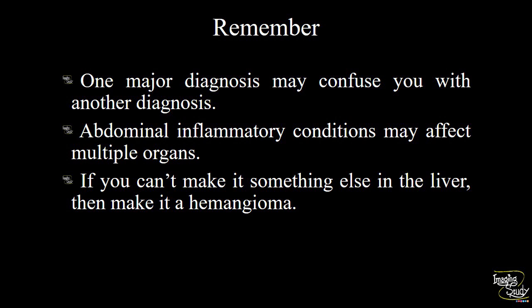Take-home message: one major diagnosis may confuse you with another, so be careful. Abdominal inflammatory conditions may affect multiple organs — if you see pancreatitis or cholecystitis, search for other abnormalities like appendiceal inflammation, adjacent gut inflammation, or lymphadenopathies. For hepatic hemangioma: if you see a hyperechoic lesion in the liver, first search for metastatic deposits or hepatocellular carcinoma; only if you can't identify features of those lesions should you call it a hemangioma.